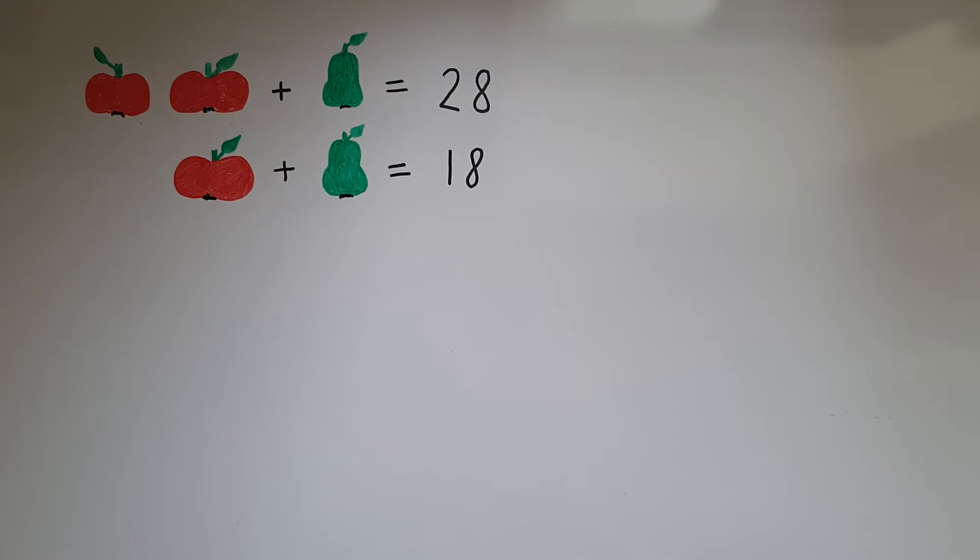I'm going to use the context of going to a grocery store where you can buy fruits and vegetables and not knowing the price for each item. We're only given that two apples and a pear cost 28 pence, and one apple and a pear costs 18 pence.